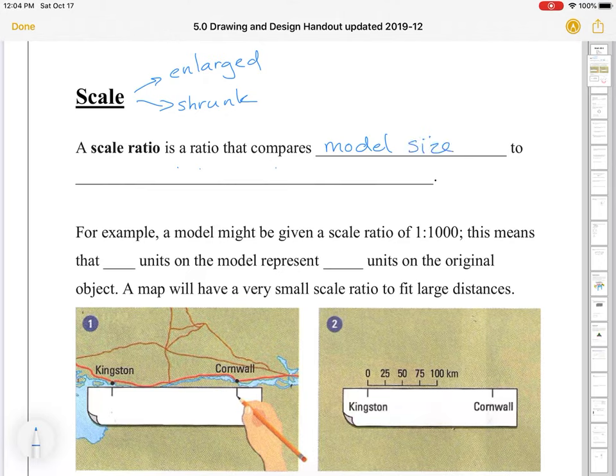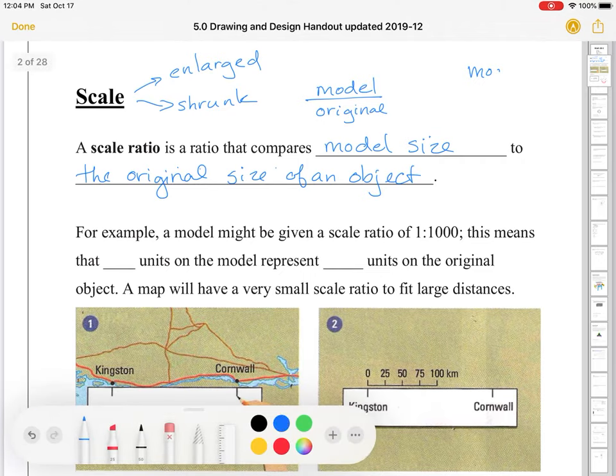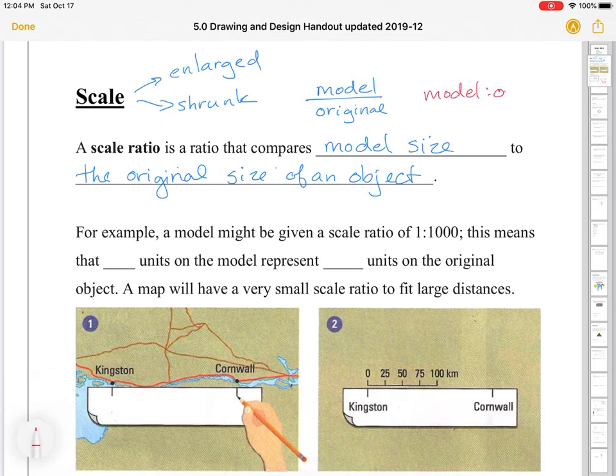Now a scale ratio, we're going to use that a lot, and it is a ratio that compares model size to the original size of an object. So that ratio, we have the one measurement, which is the model size, which is usually first or on top, and then we have the original size, which would be second or if it's a fraction on the bottom. So we would have model over original, or if we have it in a ratio, it would be model to original.